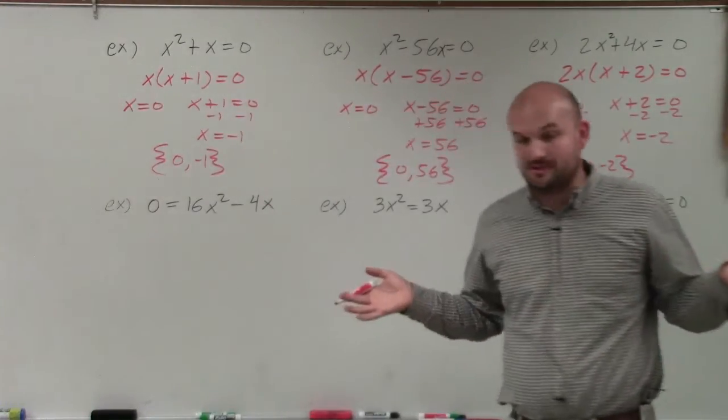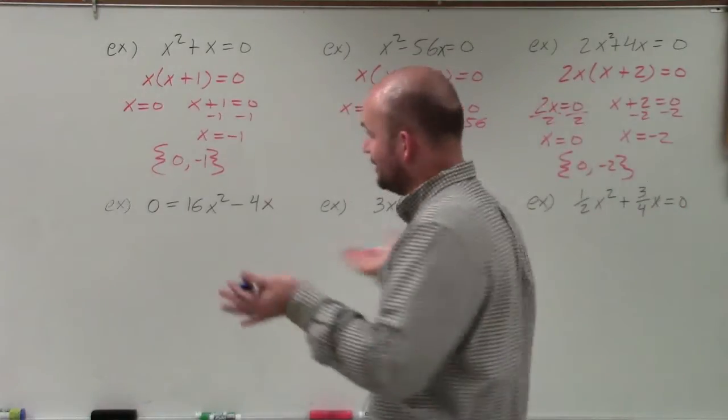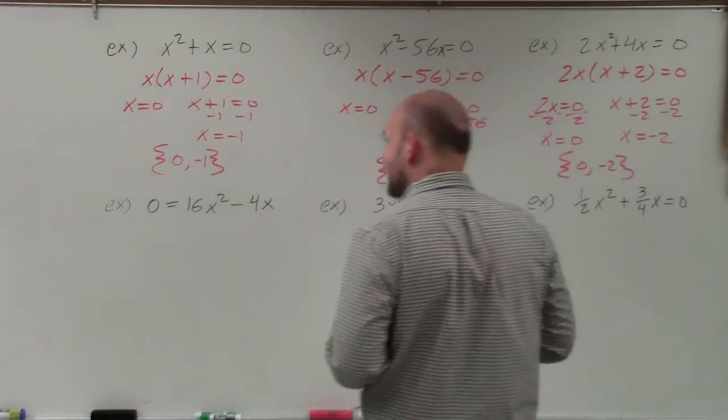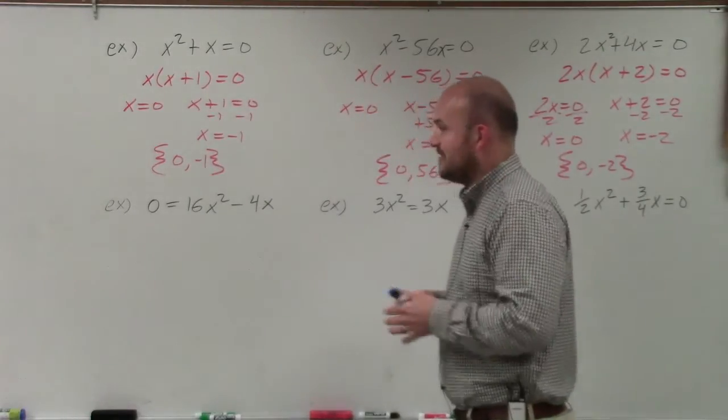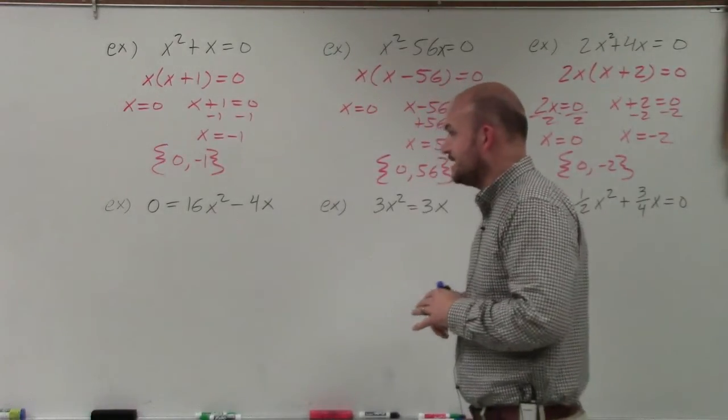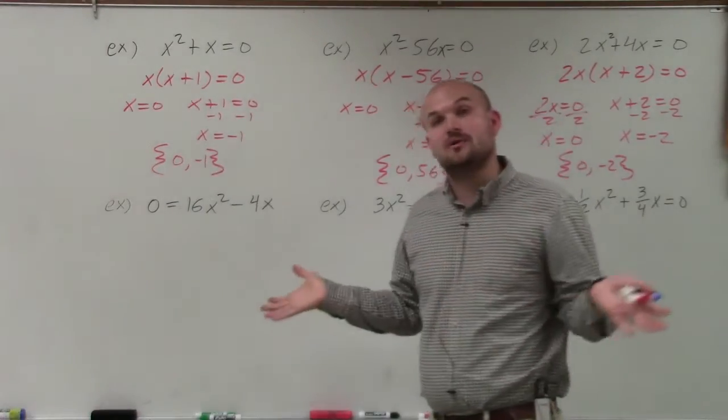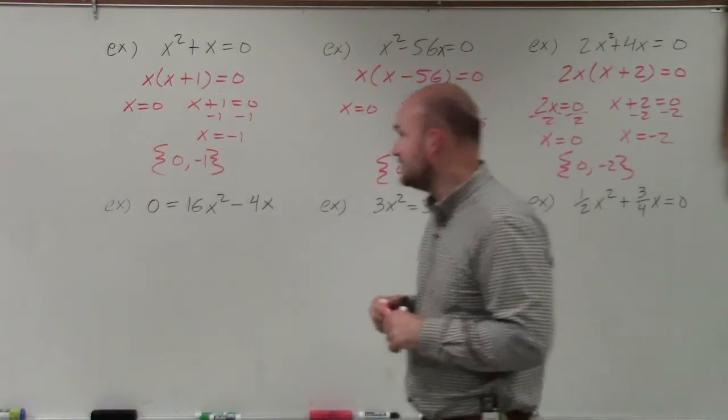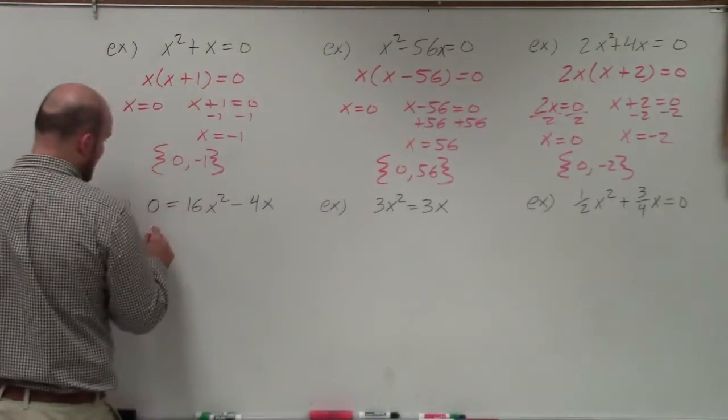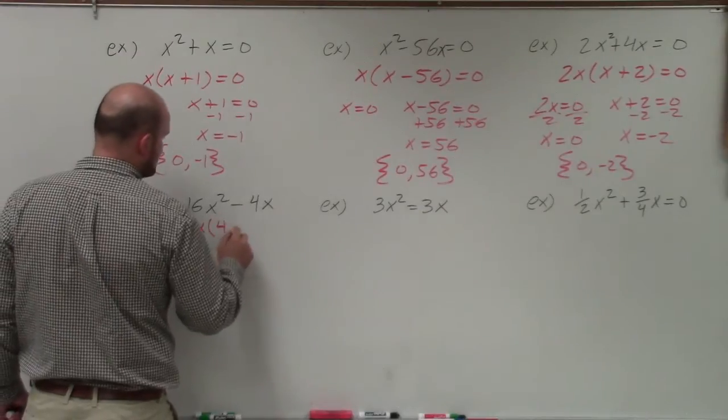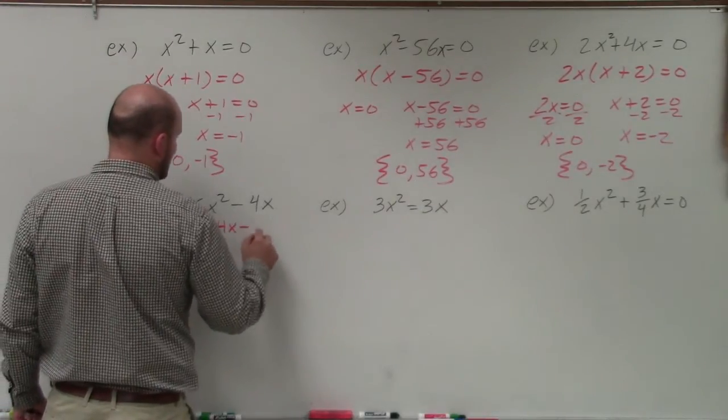Now let's get to this one. You might say it looks a little bit confusing here. Now the 0 is on the left-hand side. It doesn't matter. It's just another way to rewrite it. Again, we want to look at the common factors. We look at 16 and negative 4. We know that they're both going to have common x. And then you look at 16 and 4, 4 divides into both of those. So that's going to be my common factor, 4x. So I do 0 equals 4x, which is going to leave me with 4x minus 1.